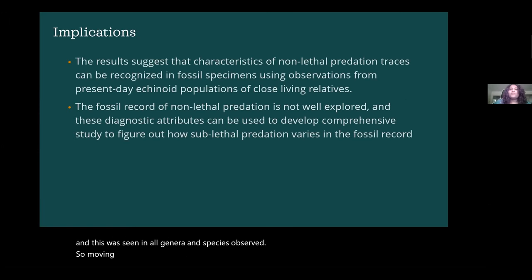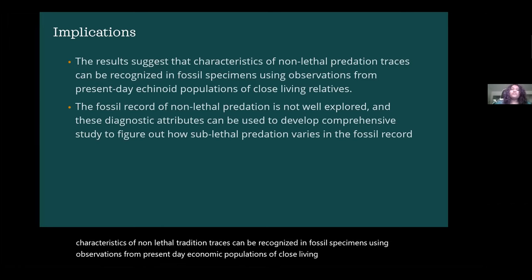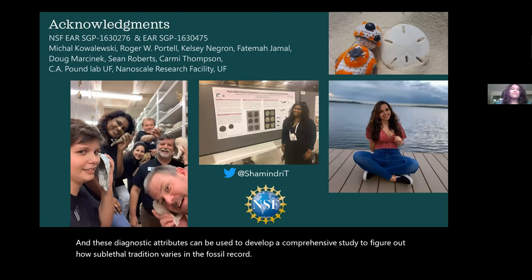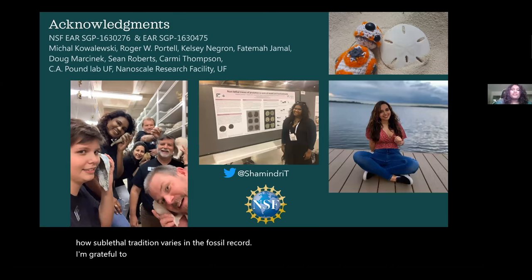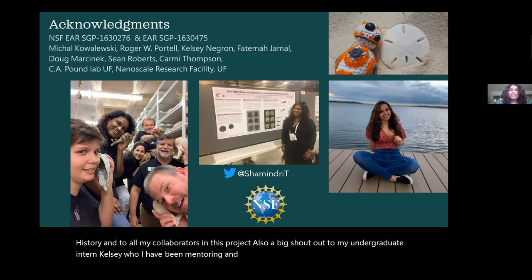These results suggest that characteristics of non-lethal predation traces can be recognized in fossil specimens using observations from present-day echinoid populations of close living relatives, and the fossil record of non-lethal predation is not well explored. These diagnostic attributes can be used to develop a comprehensive study to figure out how sublethal predation varies in the fossil record. I'm grateful to my advisor and the members of the Invertebrate Paleontology Division at the Florida Museum of Natural History and to all my collaborators. A big shout out to my undergraduate intern Kelsey, who I have been mentoring and training while carrying out this project — she has been amazing to work with. Thank you so much, and I'm happy to take any questions.